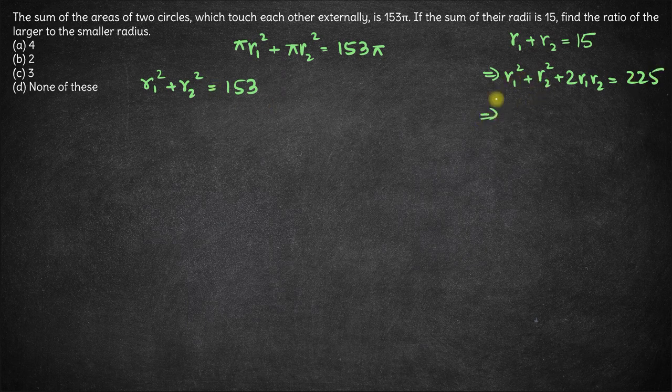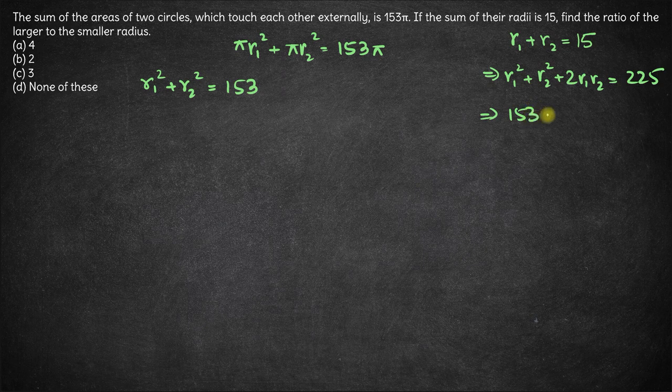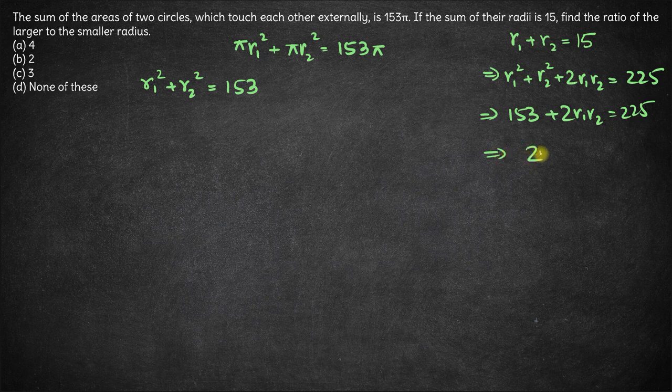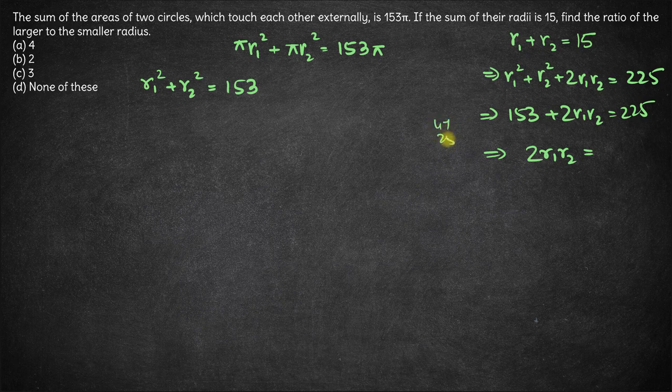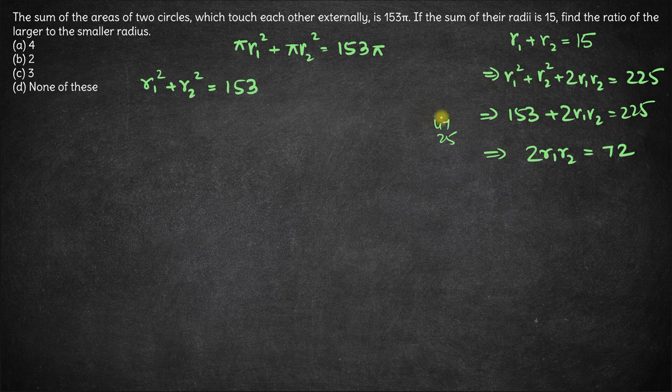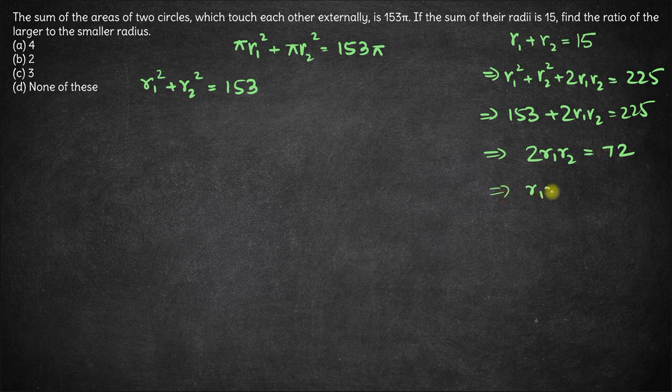From here, r1² plus r2² is 153. So we have 153 plus twice of r1 into r2 is 225. So twice of r1 into r2 is 225 minus 153, which is 47 plus 25, which is 72. This effectively gives us that r1 into r2 is 72 by 2, which is 36.